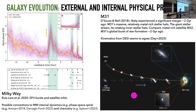A similar thing has been argued for M31, where M31's massive, relatively metal-rich stellar halo, the giant stellar stream in the M31 halo, the rotation in the inner part, the compact metal-rich satellite M32, and a global burst of star formation could all be explained by an interaction between M32 and M31 about two billion years ago. This was made possible by very deep observations of the stellar populations and the full stellar halo system.